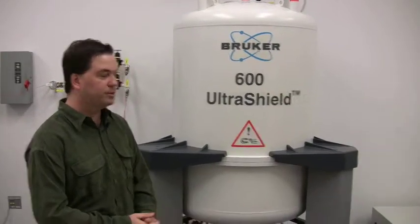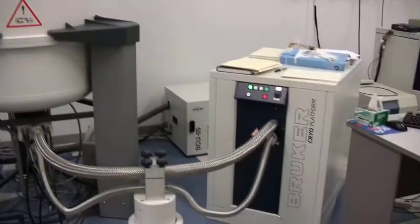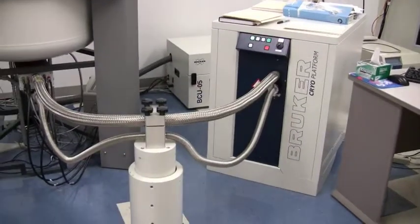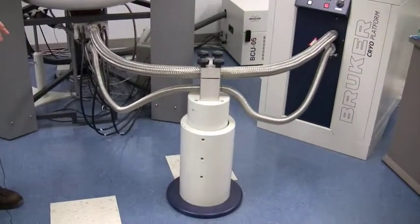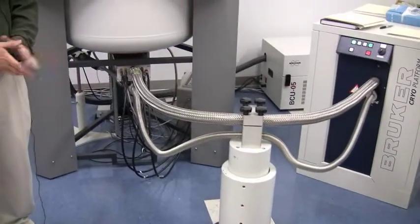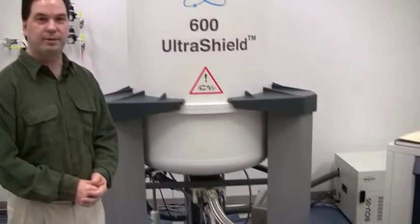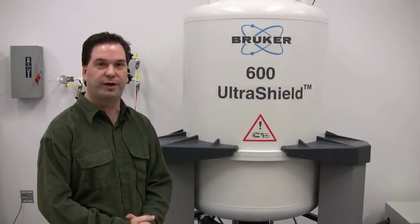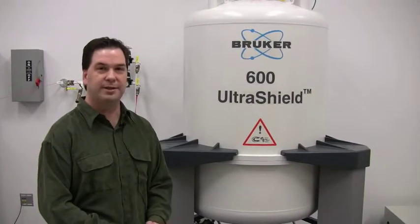This cryoprobe accessory works by cooling the important NMR components that we use to detect the signal, namely the NMR coil and the proton preamplifier to liquid helium-type temperatures, which is around 23 Kelvin. Once they're cooled to that temperature, the source of thermal noise is removed.